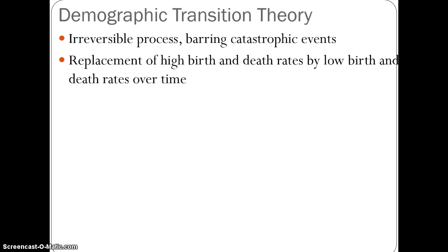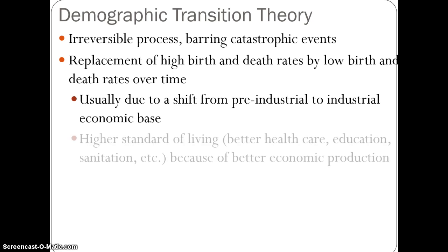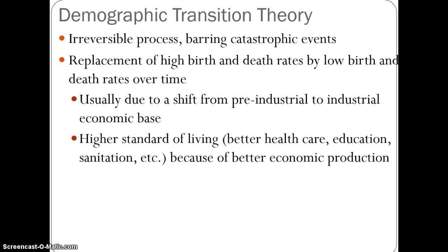Not every country is going to go through the demographic transition model in the same manner or the same years. Generally, when we look at this shift from Stage 1 all the way to Stage 4, the more industrialized your country is, the more likely you are to be in Stage 4. The more traditional and agricultural your main source of income and survival, the more likely you are to be stuck in Stage 2. There are some exceptions, but that's generally the case. The higher the standard of living, the more likely you are to be in Stage 4 or 5.